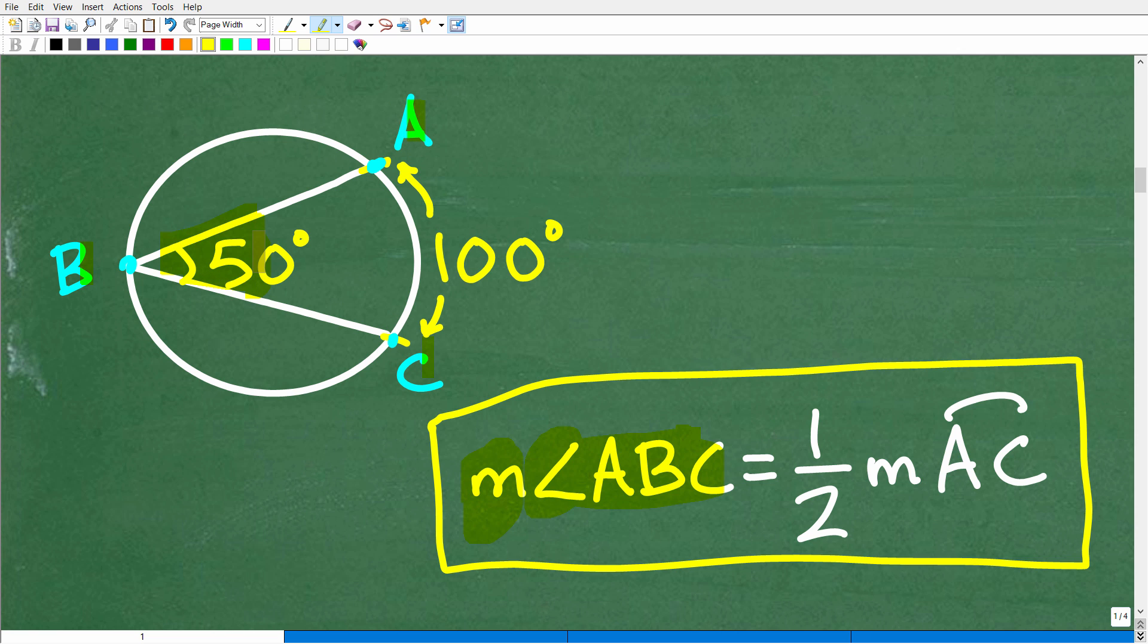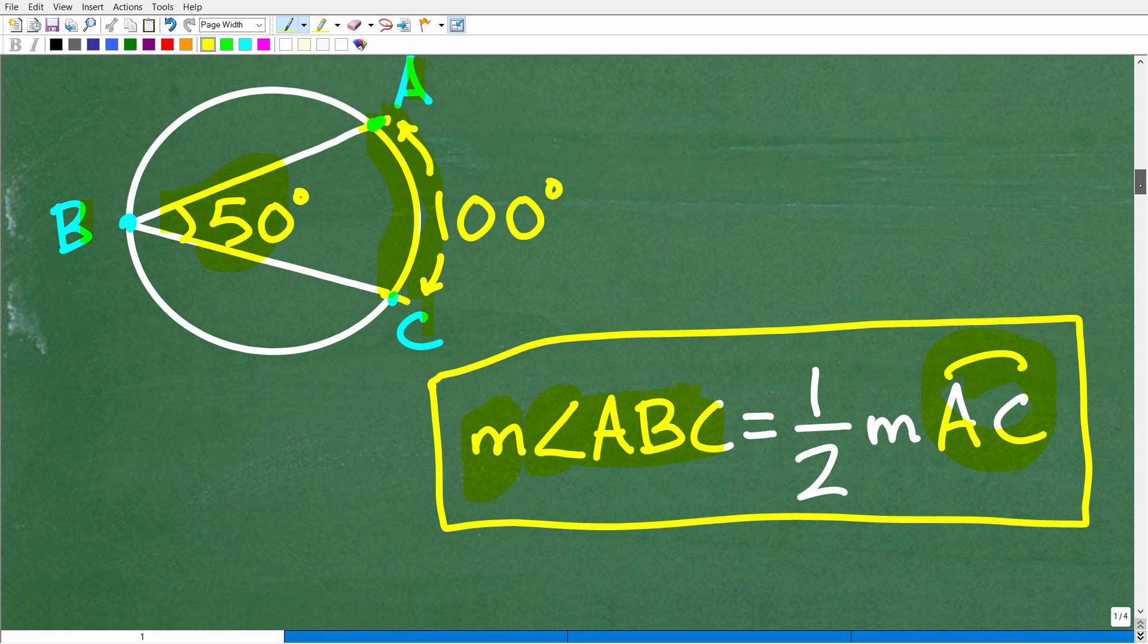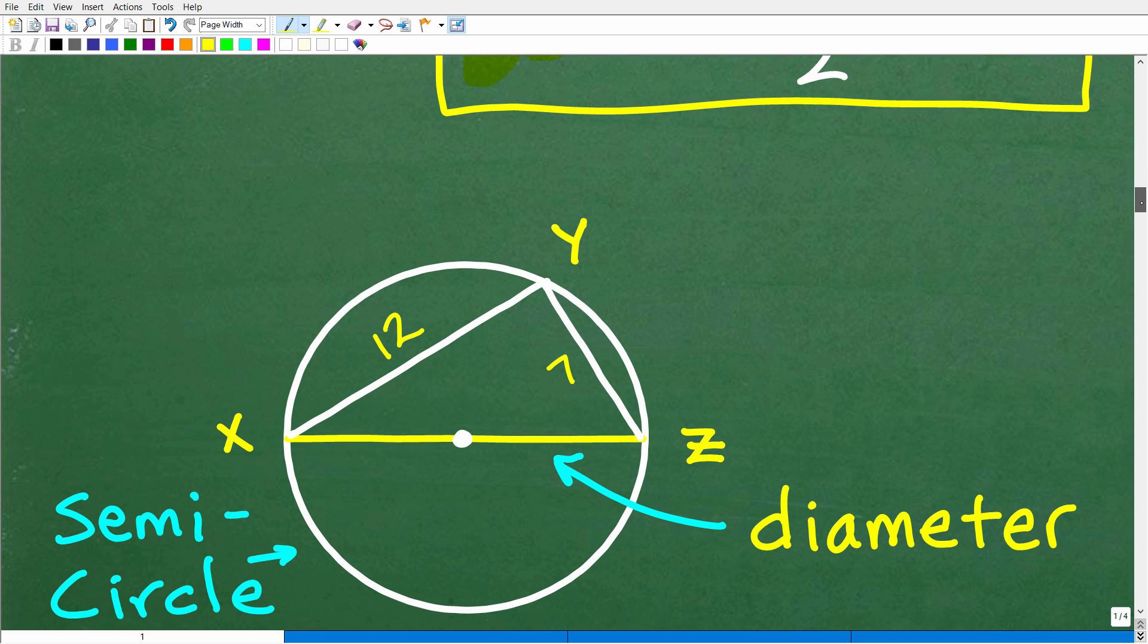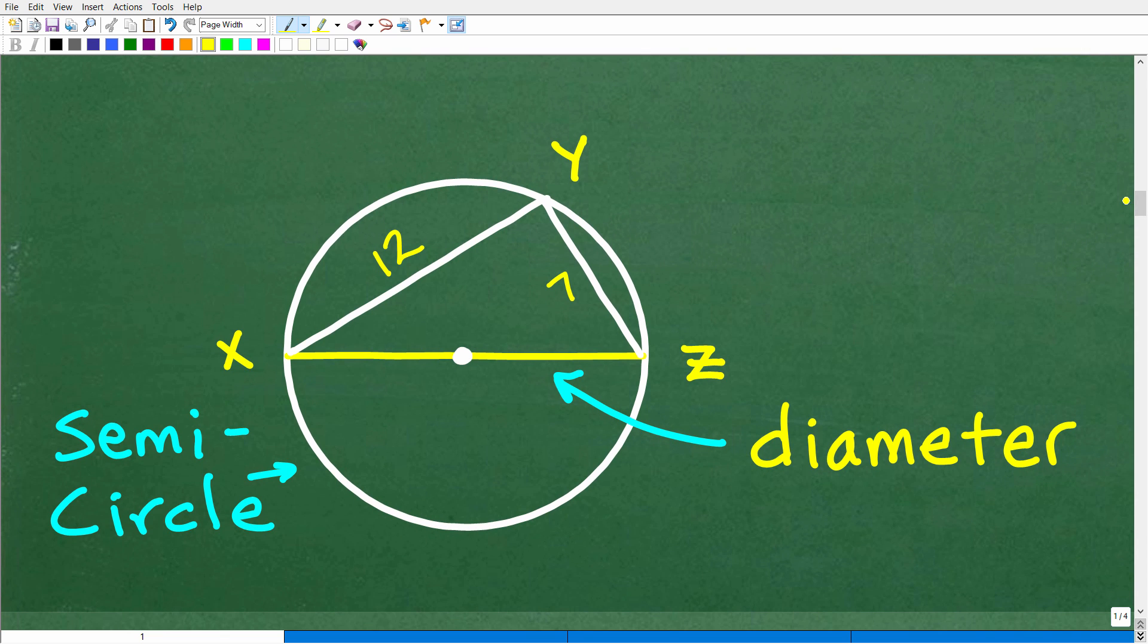We're talking about this angle right here. The measure of angle ABC is equal to one half the measure of the arc AC. So here is the arc formed by the two sides, these two chords. This is the arc being formed by the angle. So the actual angle is simply one half the value of the arc. And this is going to be critical for us.